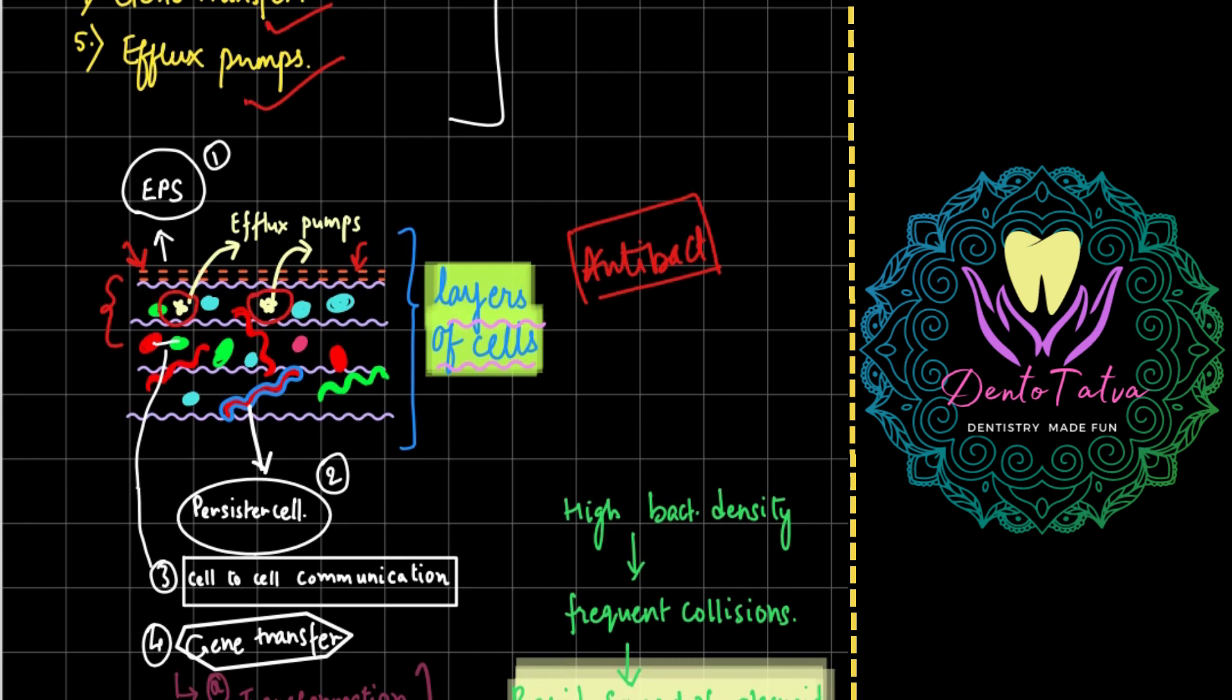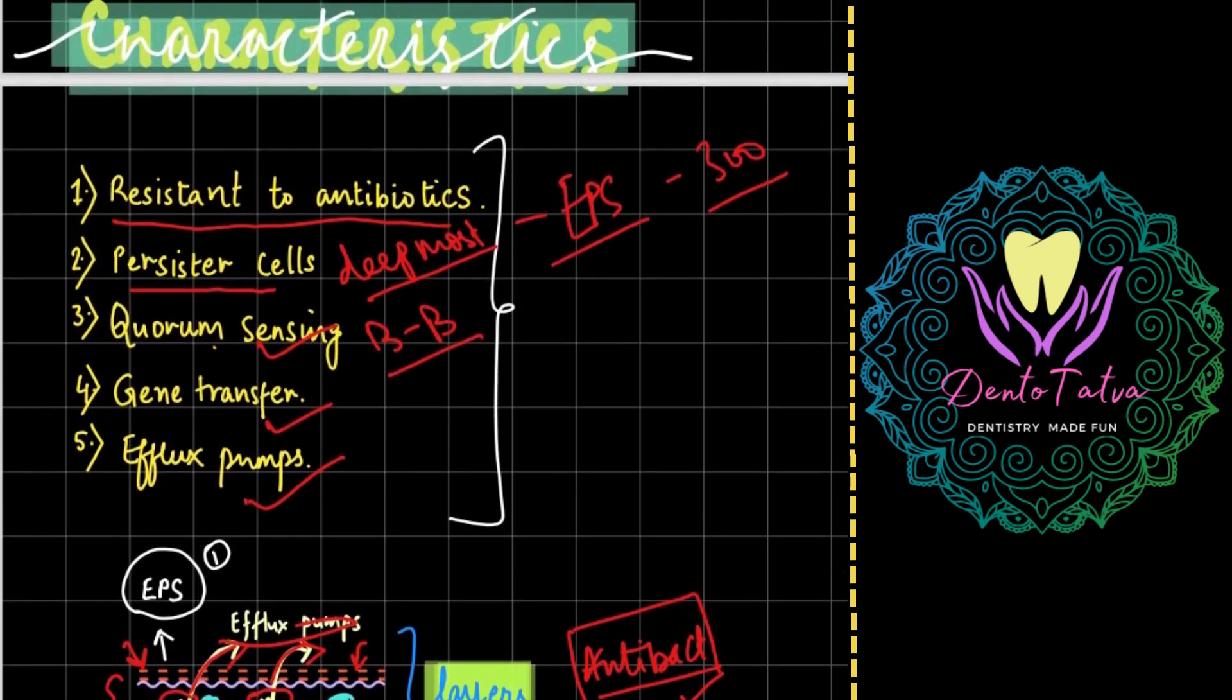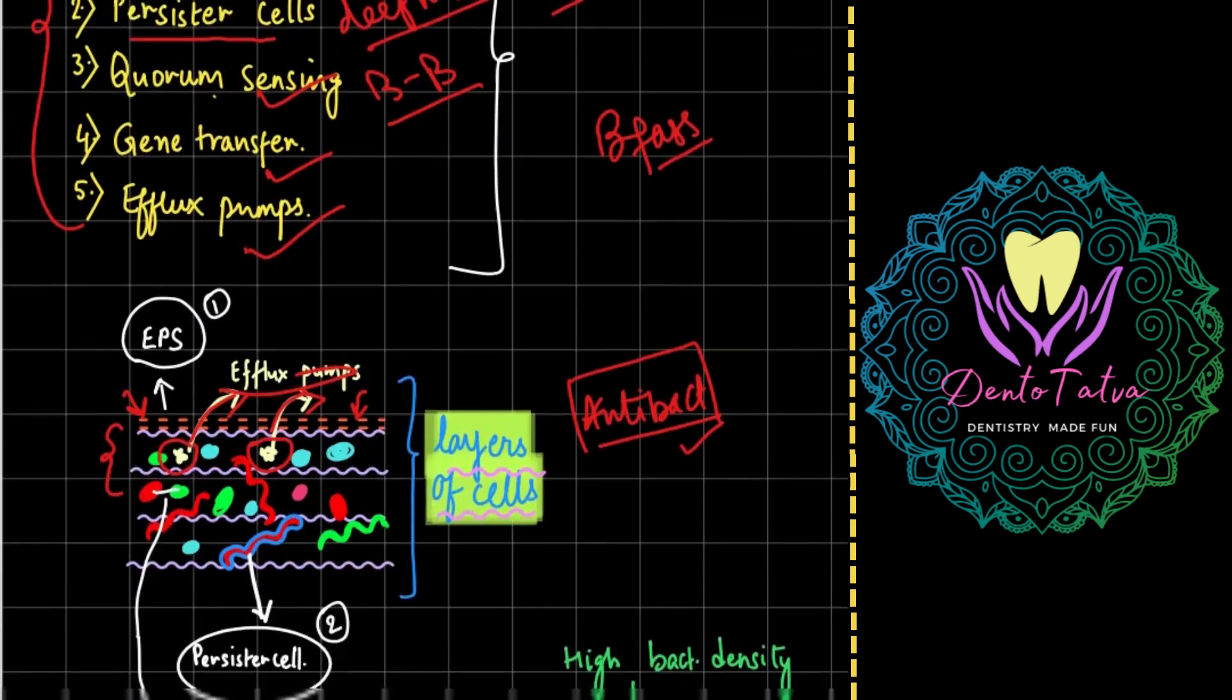Now these particles which are toxic to the biofilm structure, the antibacterial agents, what is going to happen is these pumps are effectively going to pump these toxic particles out of the biofilm structure. So efflux pumps are also a part of the problem which makes this entire structure or assembly of biofilm extremely resistant to the antibiotic force.